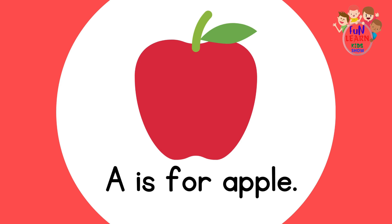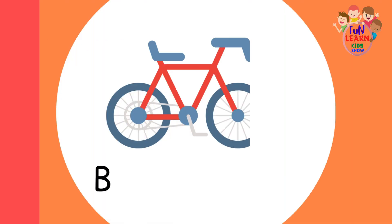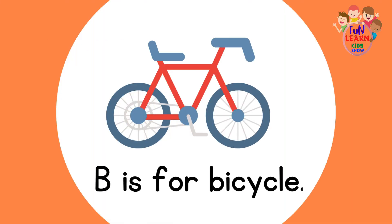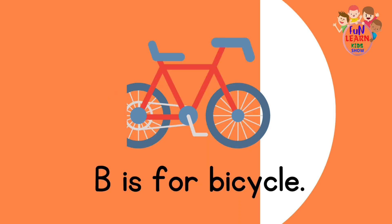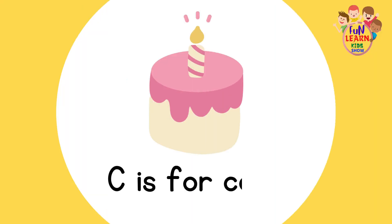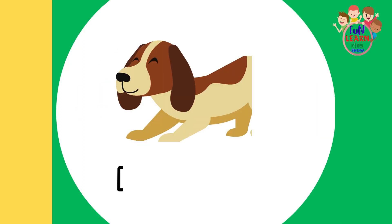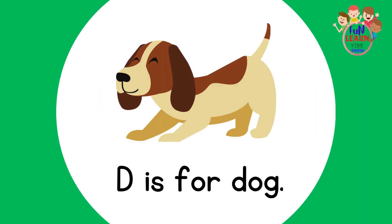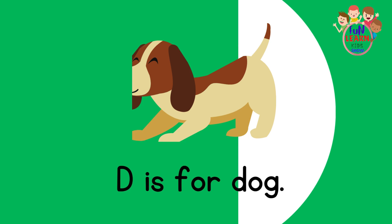A is for Apple. B is for Bicycle. C is for Cake. D is for Dog.